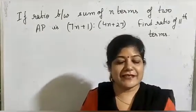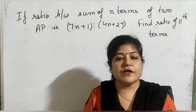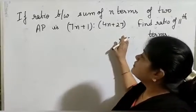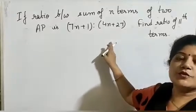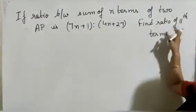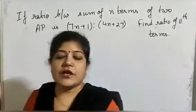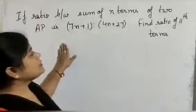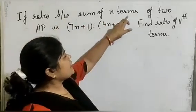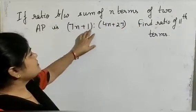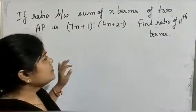In arithmetic series, we have problems related to the sum of terms and the number of terms. If the ratio of sum of terms of two series is given, how will you find the ratio of the nth term of the two series? In this question, I am going to share how to solve this type of question. Our question is: if the ratio between the sum of n terms of two AP series is given, we have to find the ratio of the 11th terms.